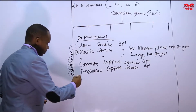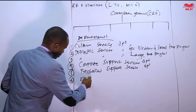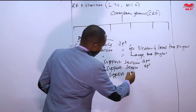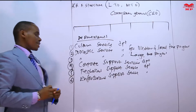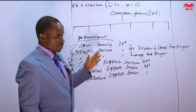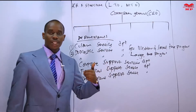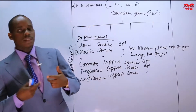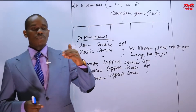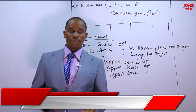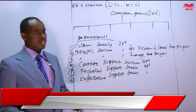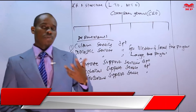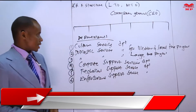The last one, department number six, is the Enforcement Support Service Department. Where we have enforcement, KRA wants to ensure that we are dealing with those people who are not complying, and we have a good way of doing follow-up. This particular department ensures that we have penalties and fines, and there is proper follow-up of those people who have not complied with the tax system.